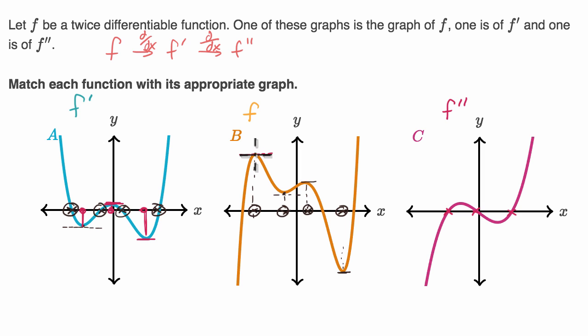So between this maximum point and this minimum point, at first, the slope is decreasing. So the slope is getting more and more negative.